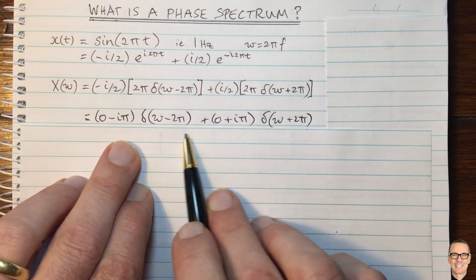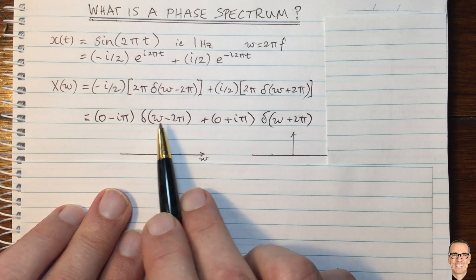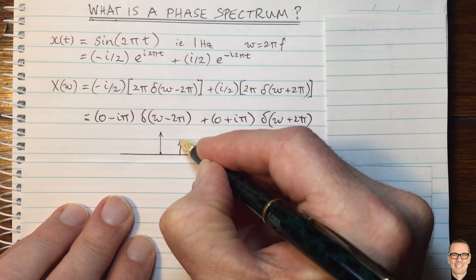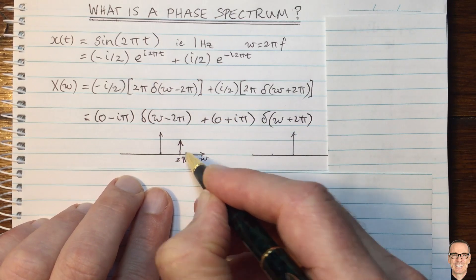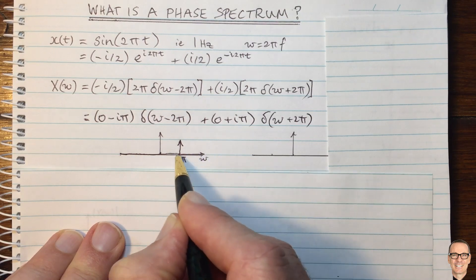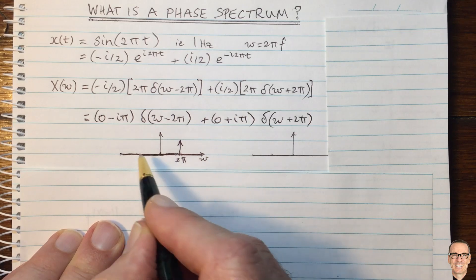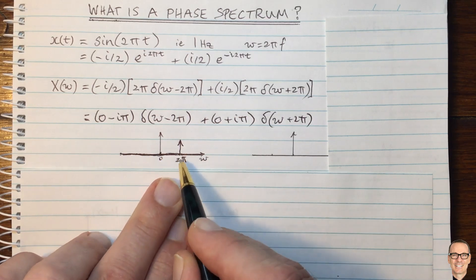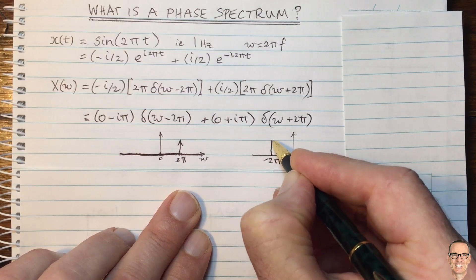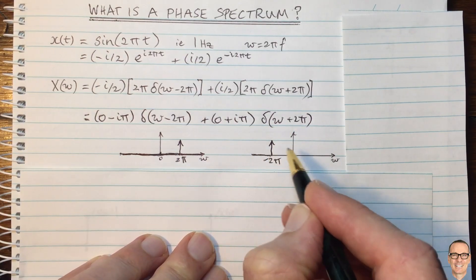Let's try to visualize that. The first delta function is at omega equals 2 pi on a plot where the x-axis is radial frequency. It's important to remember this is zero everywhere else — sometimes people focus only on the impulse and forget it is a full function of omega that just happens to equal zero everywhere else. The second delta function is at omega equals minus 2 pi, and again zero everywhere else.